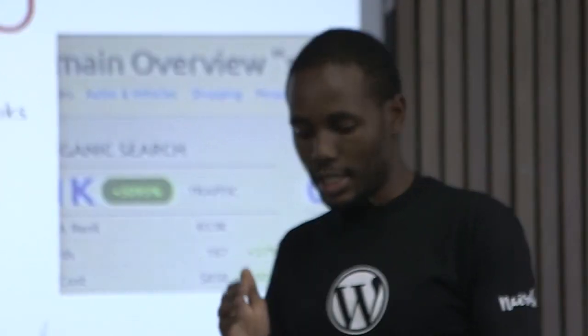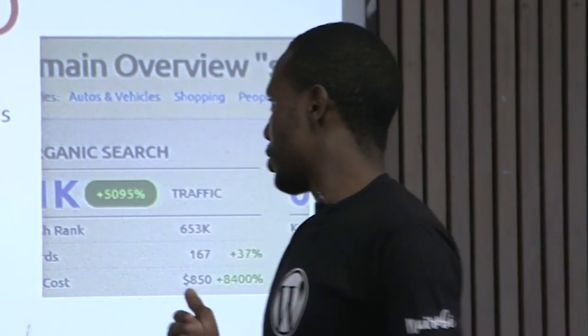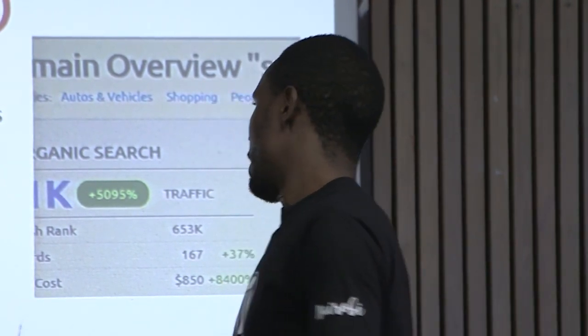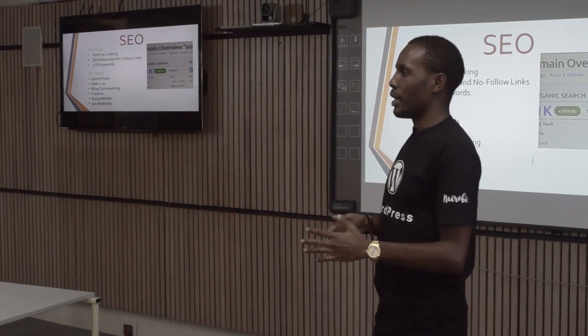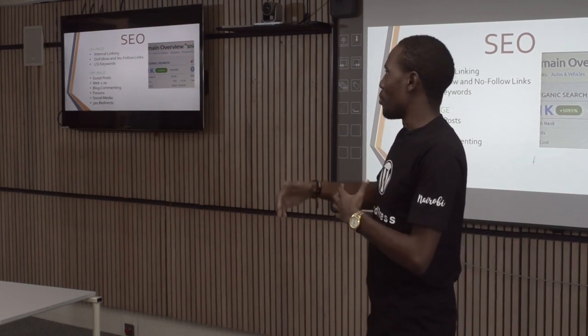SEO helps your site rank at the top of search engine results pages. The most profitable positions are one, two, and three — because even when you're searching for something yourself, you click on the first, second, or third result. Being on the first page of Google means money for you. For on-page SEO, you have to do what we call interlinking — linking between articles and between your homepage and articles — to pass what we call link juice.